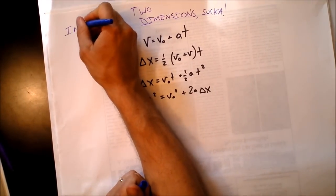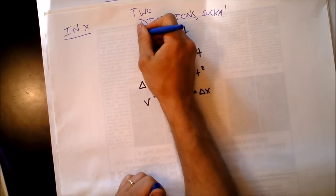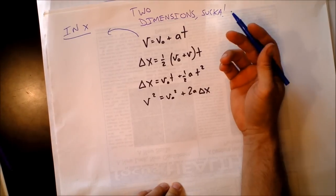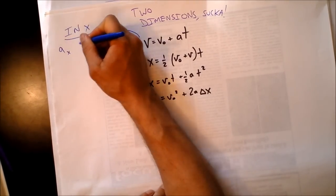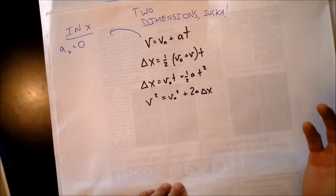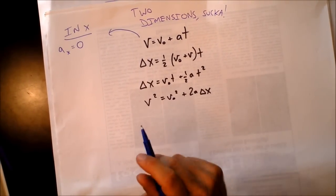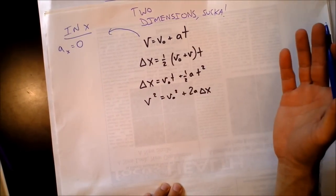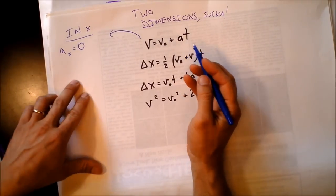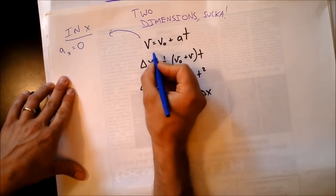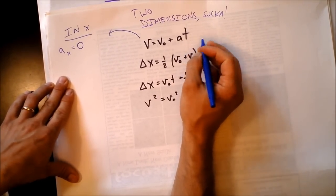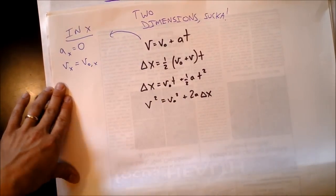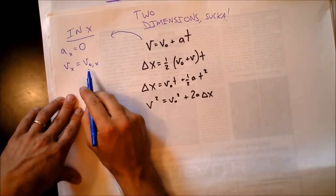In the x direction, the acceleration is zero because gravity points straight down. So any time we see acceleration in these equations, we set it equal to zero. The definition of acceleration, when acceleration is zero, simply says that the velocity in the x direction equals the initial velocity in the x direction — constant velocity.